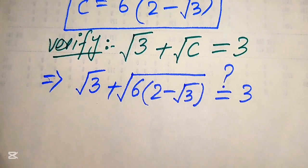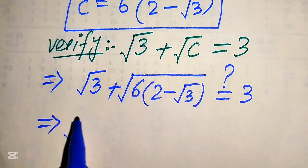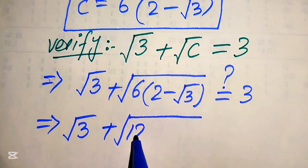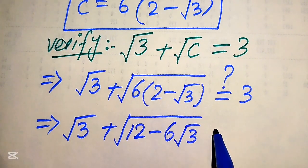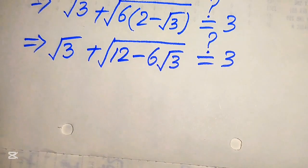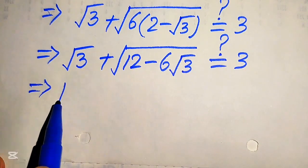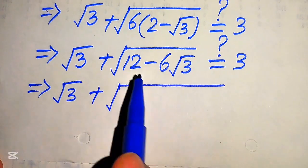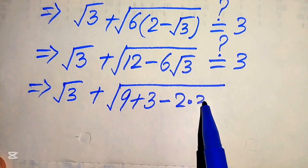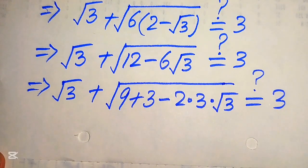To simplify, we need to complete the square inside the square root term. We multiply 6 into both terms inside, giving square root of 3 plus square root of (12 minus 6 times square root of 3), and we check whether this equals 3 or not. We then rewrite 12 as 9 plus 3, and 6 as 2 multiplied by 3.